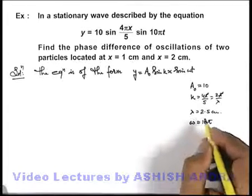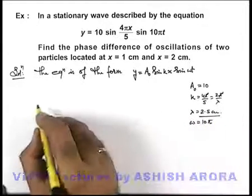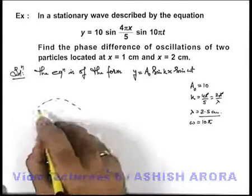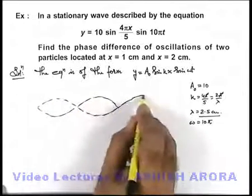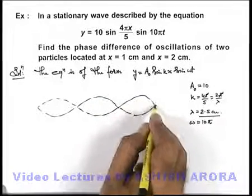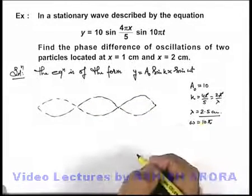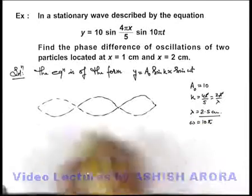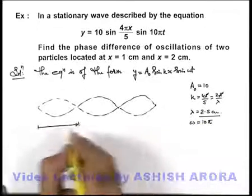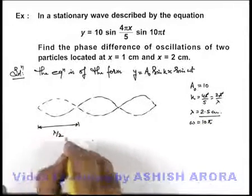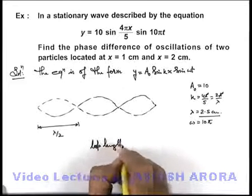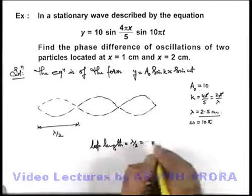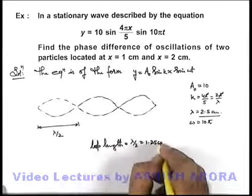Now in this situation, as the wavelength is given as 2.5 centimeter, we can draw the loops of stationary waves. In this situation the loop length is 2.5 centimeter by 2. As we know, the length of each loop is λ/2, so here we can write loop length to be equal to 1.25 centimeter.